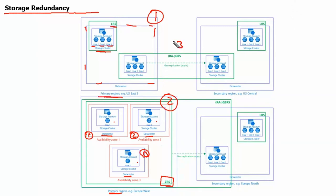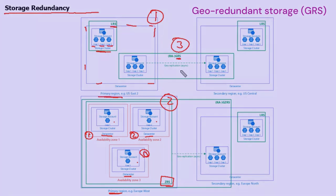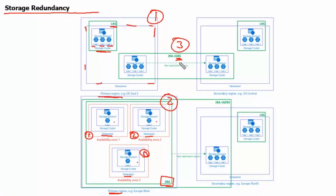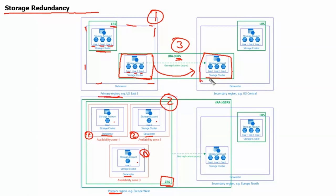The third redundancy option is GRS, or geo-redundant storage. GRS copies data synchronously three times within a single physical location in the primary region using LRS. Then it replicates or copies the data synchronously to a single physical location in the secondary region. Within the secondary region, data is also copied synchronously three times using LRS.